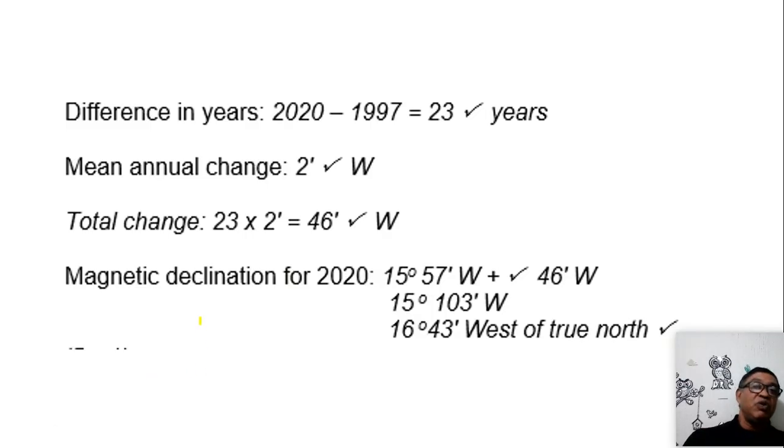So let's go on with it. The first thing I need to know, I had 1997. We know it's 2020 at the moment. So I have to find out what is my difference in years. I take this minus this and I've got 23 years.